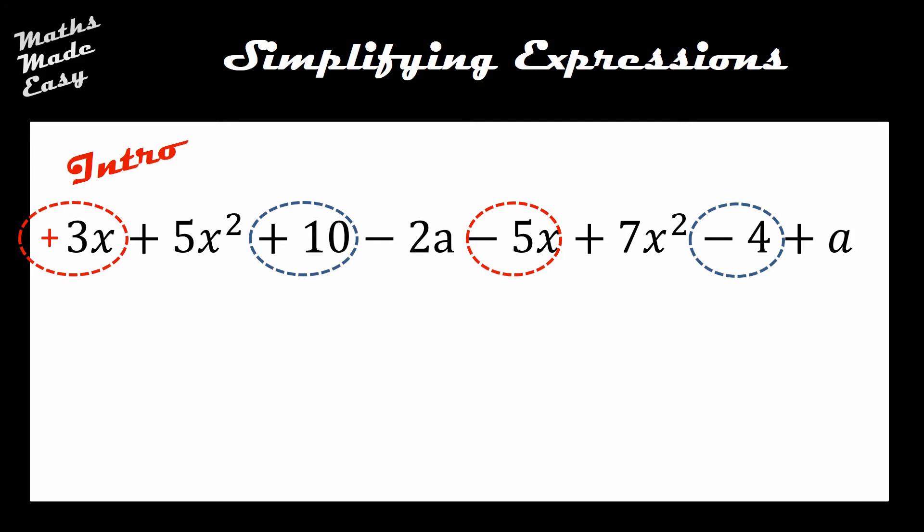The next term I'm going to have a look at are the x squareds. Now some of you might be looking at this and thinking well why is an x and an x squared different because they've both got the letter x in. But remember, x squared means that I've taken a number and squared it, whereas x just means it's that number with nothing else happening to it. A good example of this would be asking if 10 squared is the same as 10. Well 10 squared is 100 and 10 is just 10, so they are totally different things. Again I'm including the signs on these, so I've got positive 5x squared and a positive 7x squared.